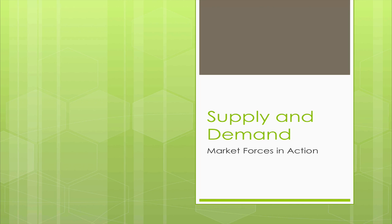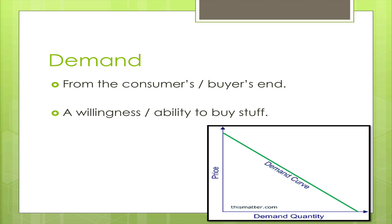Hello, and welcome to our podcast on supply and demand. Ideally, you've seen the podcast on both of these economic factors as they were recorded individually. Now we can go ahead and put them together and see how the interaction of these really shapes the free market system. Just a quick review: remember that demand is from the consumers or the buyers end, and we define this as a willingness and an ability to actually buy stuff.